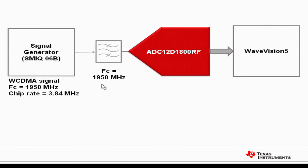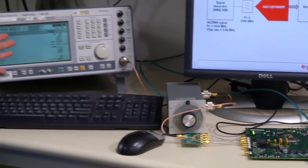Then this signal is sampled by the ADC12D1800RF, and the data is uploaded into WaveVision 5. So WaveVision 5 is a software which can evaluate the ACPR. So let's go ahead and take a look at the setup on the bench.